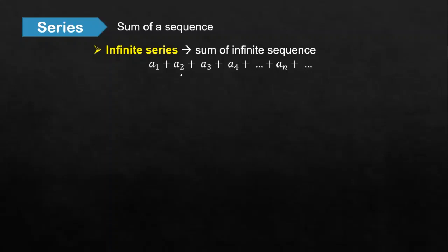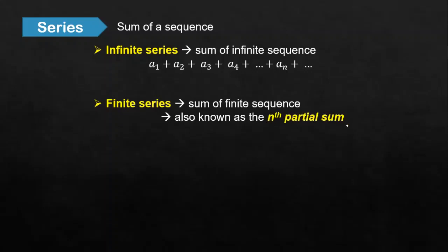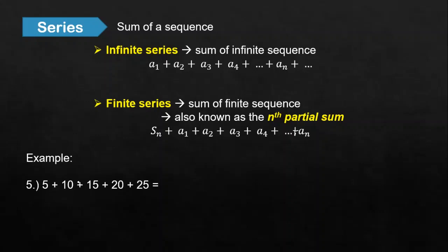Here, the commas from the sequence are replaced by plus signs because it's now a series. When it's a finite or finite series, it is the sum of a finite sequence, also called the nth partial sum — partial because it's not infinite. It's as if we cut it up to a_sub_n. For example, we have 5 plus 10 plus 15 plus 20 plus 25, which gives us a sum of 75.